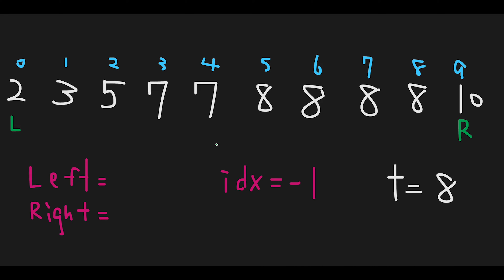In binary search, first we initialize the index number with -1. The left pointer starts at 0 and the right pointer starts at last index 9. 0 + 9 divided by 2 is 4, so the middle pointer is now index 4. The value is 7 and the target is 8.